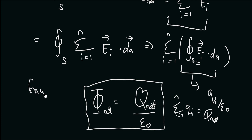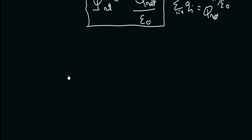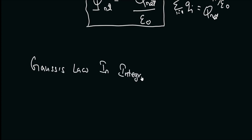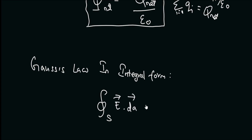This is what we call Gauss's law, written in integral form: the closed surface integral of E dot dA equals the total charge enclosed within the surface divided by epsilon-naught.